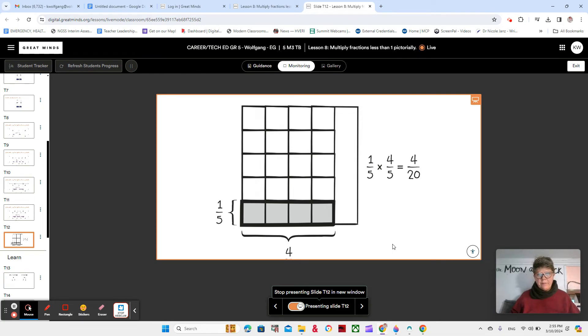1/5 times 4/5 equals 4/20. And the student made a model to show it.